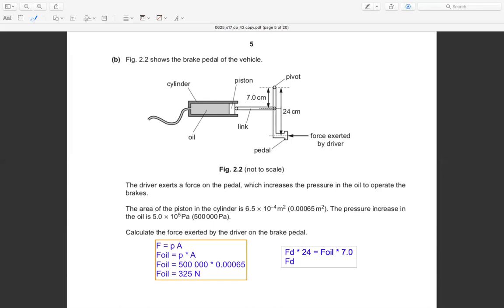Let's say this is 7 divided by 24 times F oil. F oil is 325, so F by driver equals to 7 times 325 divided by 24.